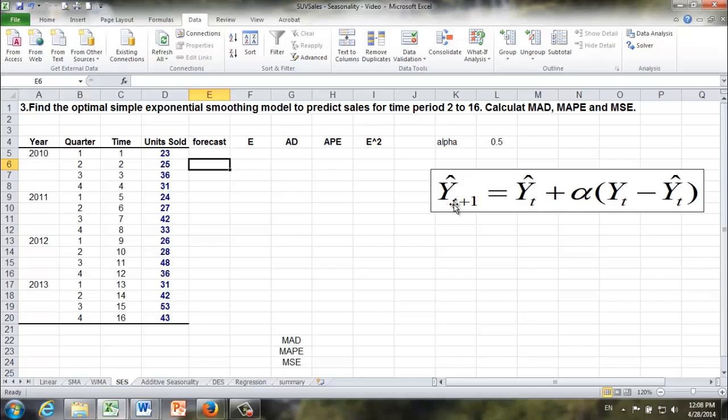All right, let's see how this formula works. Suppose we want to make forecast for time period 1, so t plus 1 equals 1, that means t equals 0, so it's going to be equal to y_0 hat plus alpha times y_0 minus y_0 hat. But where are we going to find y_0 and y_0 hat? No, we cannot.